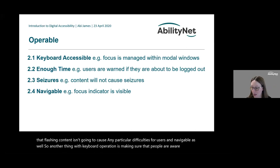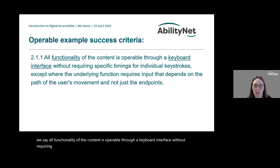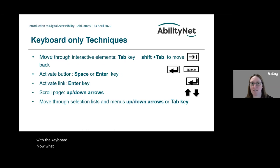Looking at the keyboard criterion more closely — how it's written: 'All functionality of the content is operable through a keyboard interface without requiring specific timing for individual keystrokes, except when the underlying functionality requires input that depends on the path of the user's movement and not just the endpoint.' Essentially, you must be able to operate everything with a keyboard.